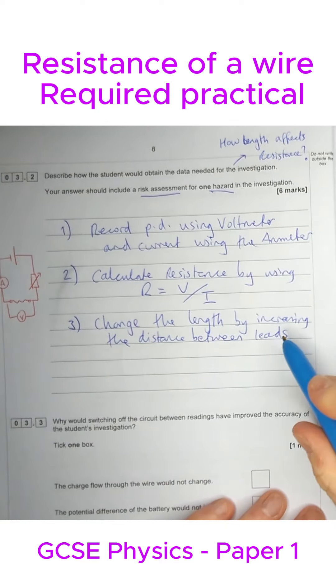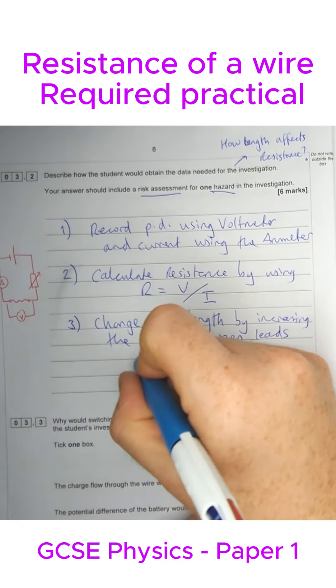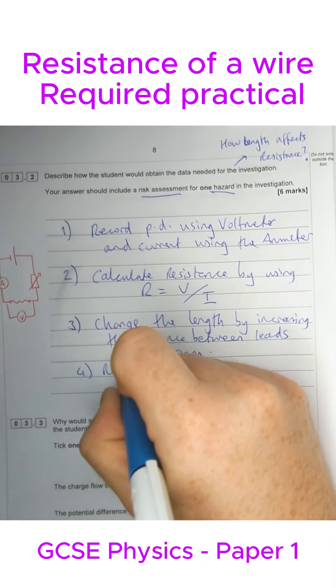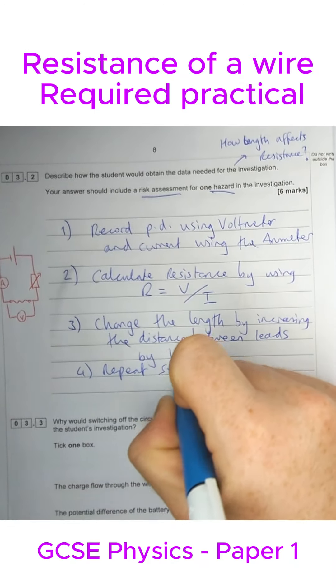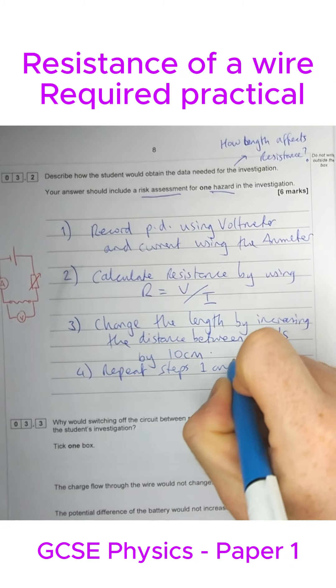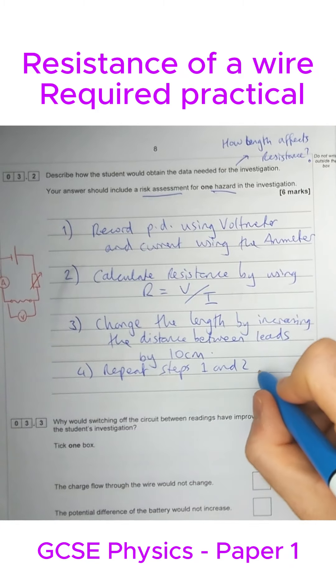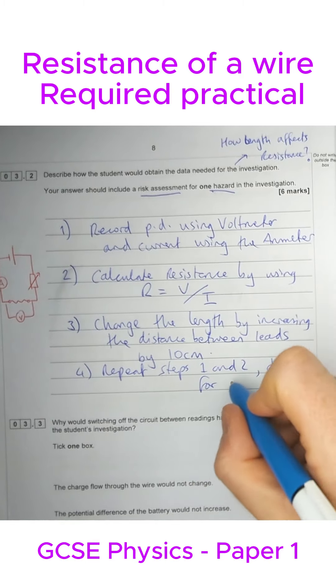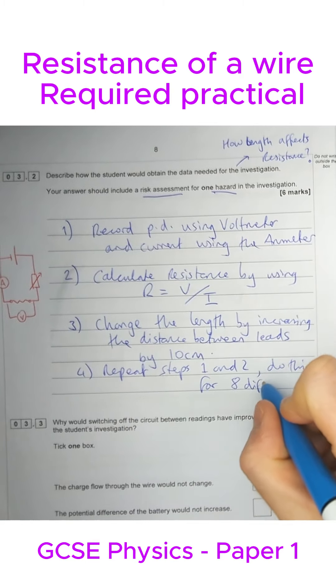It's crocodile clips here, it doesn't really matter. And I'm going to say by, let's say, 10 centimeters. Then what we do is repeat steps one and two, to measure the resistance each time, and do this for several, let's say, eight different lengths.